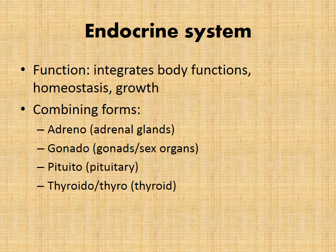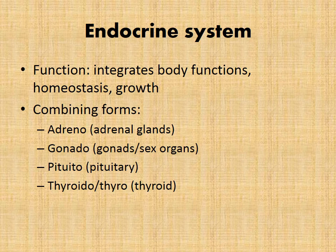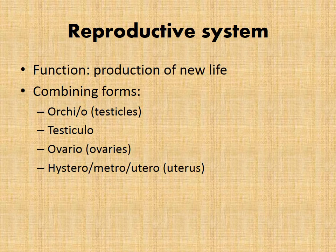The endocrine system integrates body functions, homeostasis, and growth. Combining forms for that would be adrenal in reference to the adrenal glands, gonado for our gonads or sex organs, pituitary for the pituitary gland, and thyroido or thyro for the thyroid.